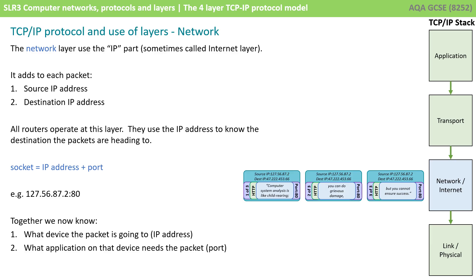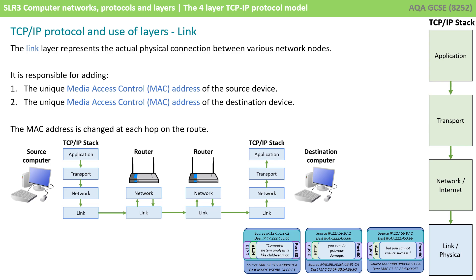All routers operate on this layer. The destination IP address is combined with a port number, and together they create a socket. Together they tell us what device the packet is going to — via the IP address — and what application on that device needs the packet — via the port. Finally, we pass down to the link layer, sometimes called the physical layer. It's the lowest layer of the model and represents the actual physical connection between nodes. It is responsible for adding the MAC address, with both a source MAC address and a destination MAC address wrapped around everything else.